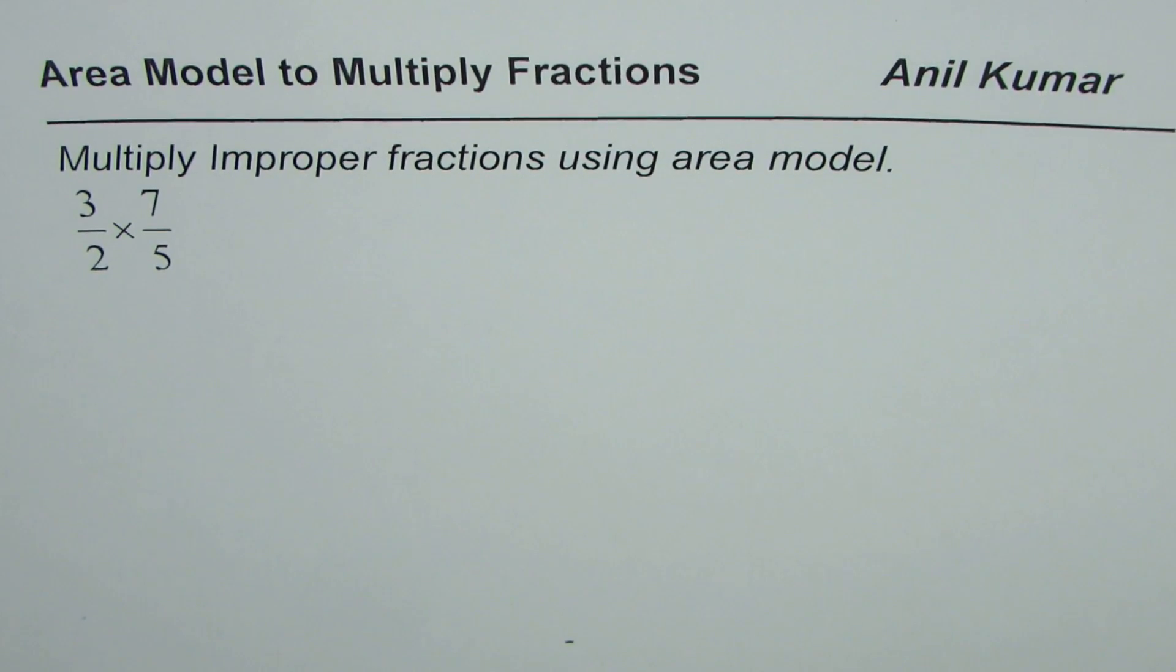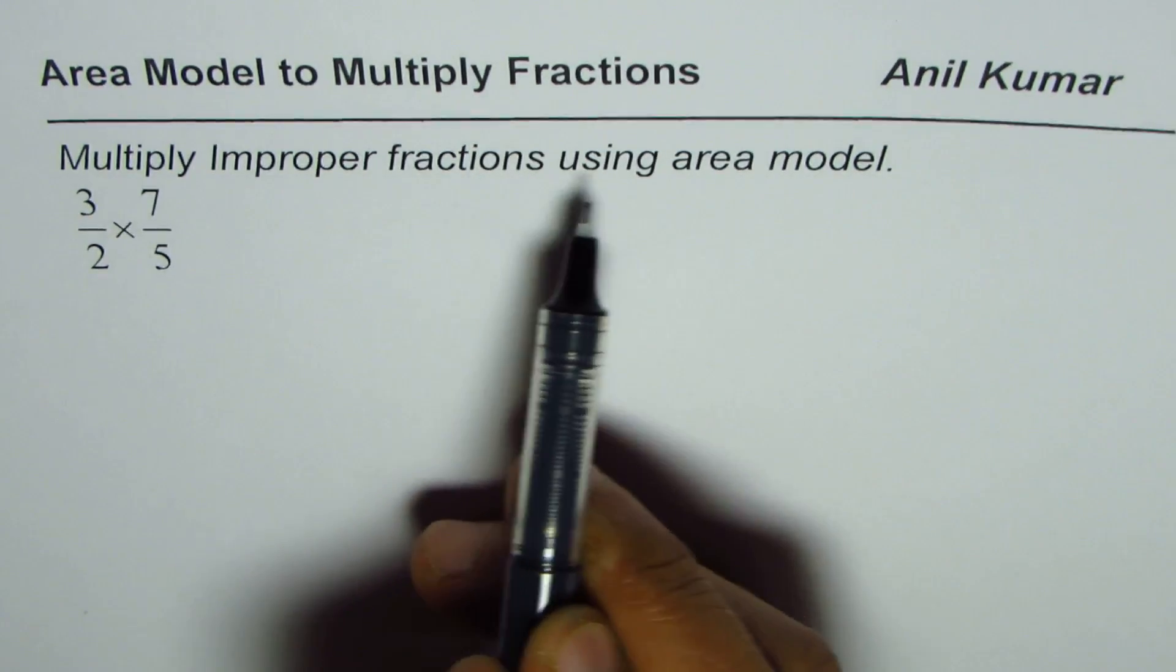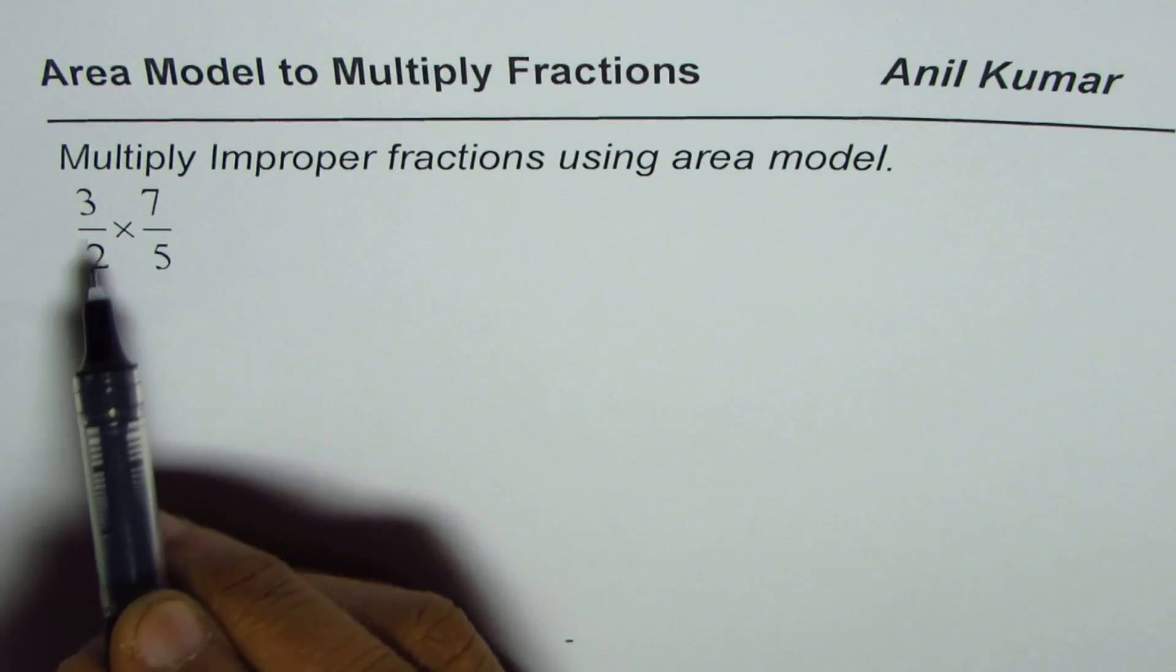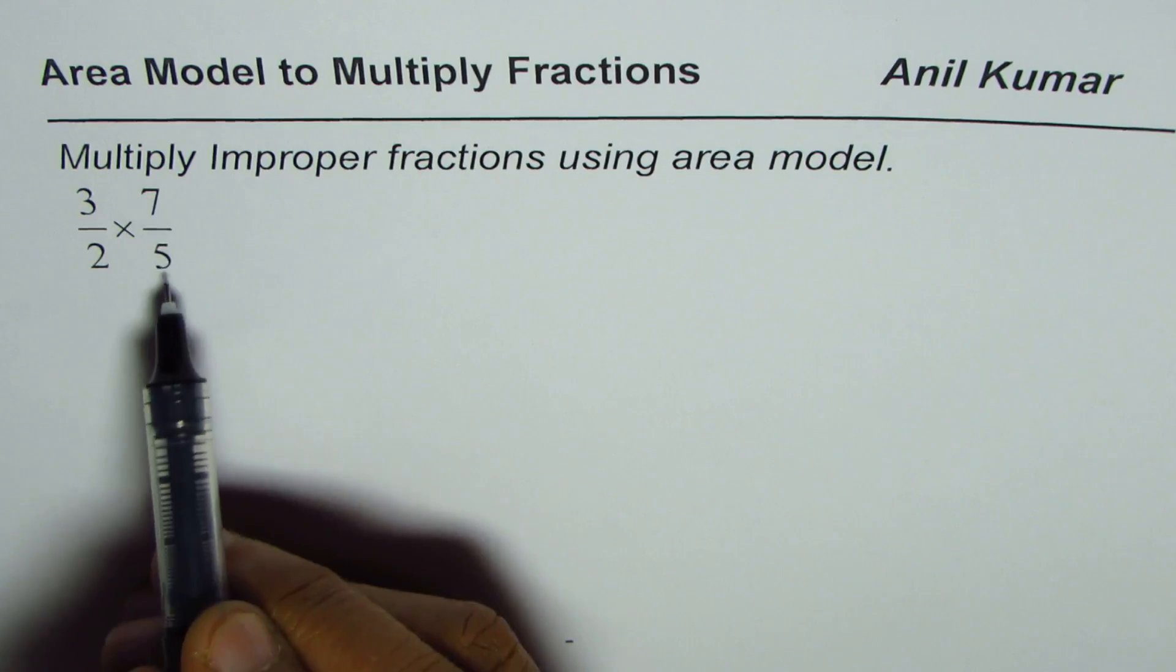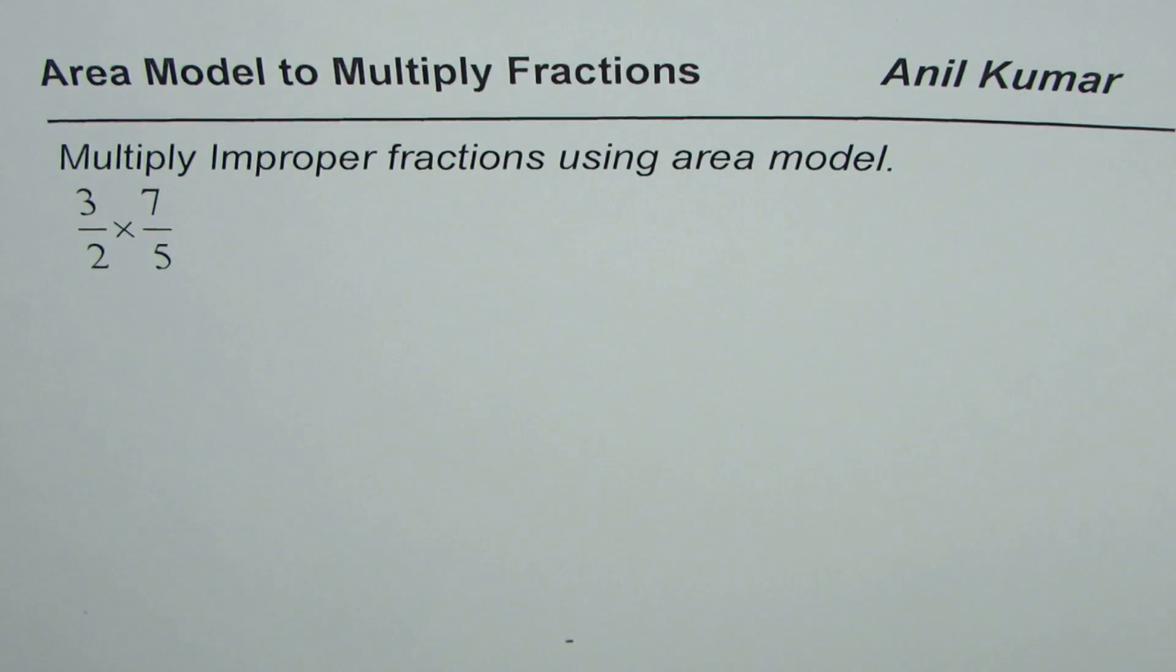I'm Anil Kumar and in this video we will learn how to use the area model to multiply improper fractions. The question here is multiply improper fractions using area model: 3 over 2 times 7 over 5.